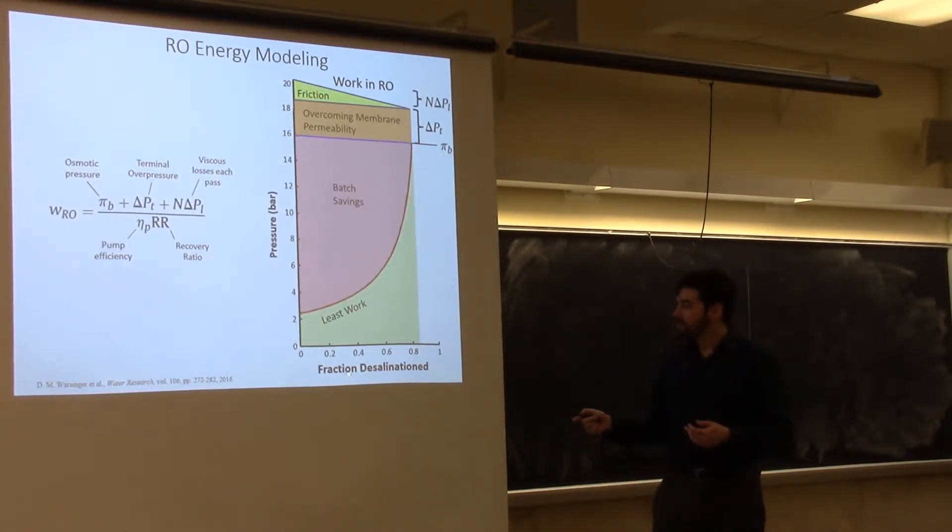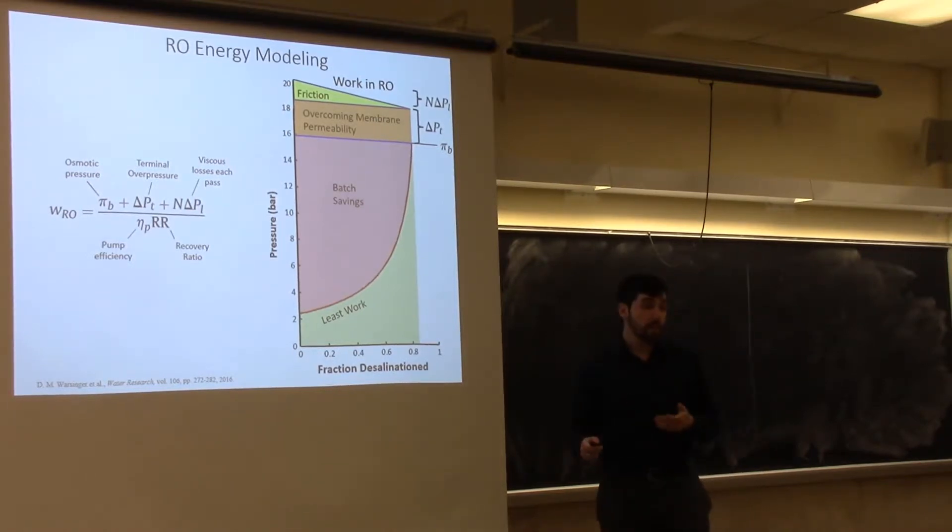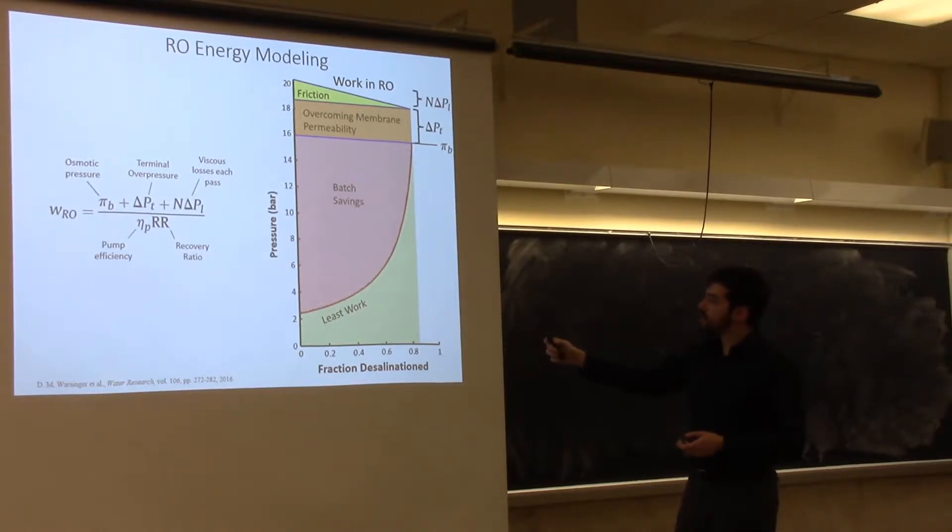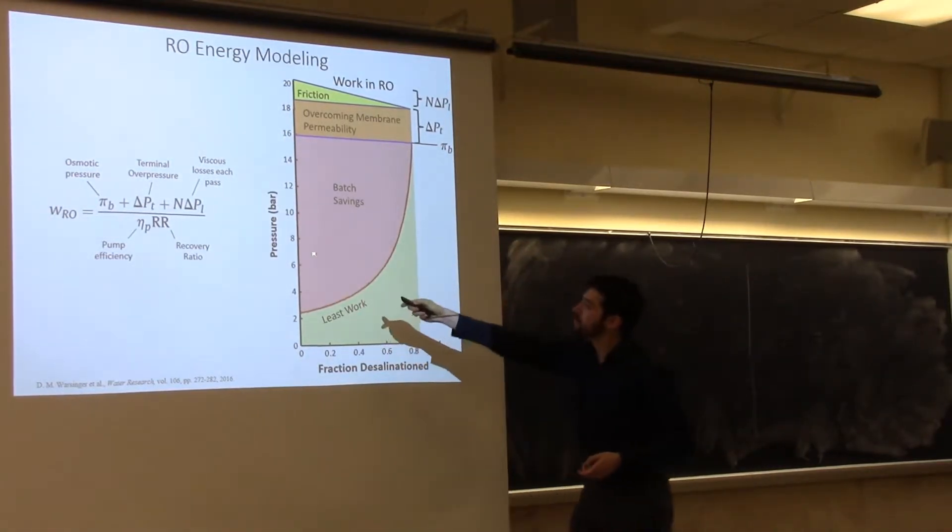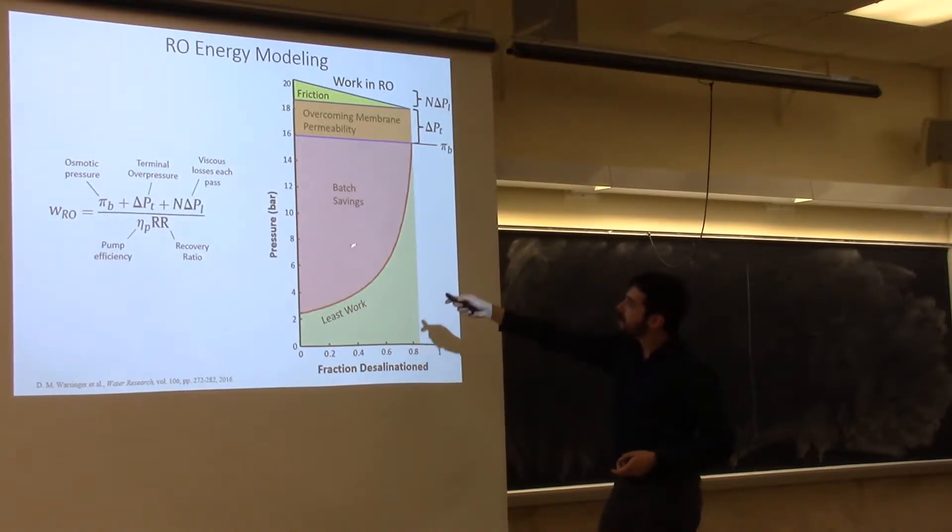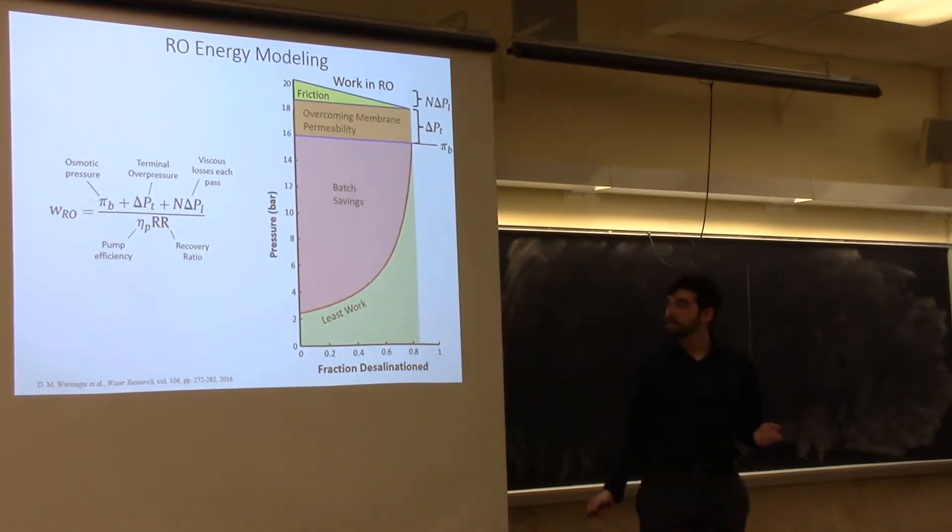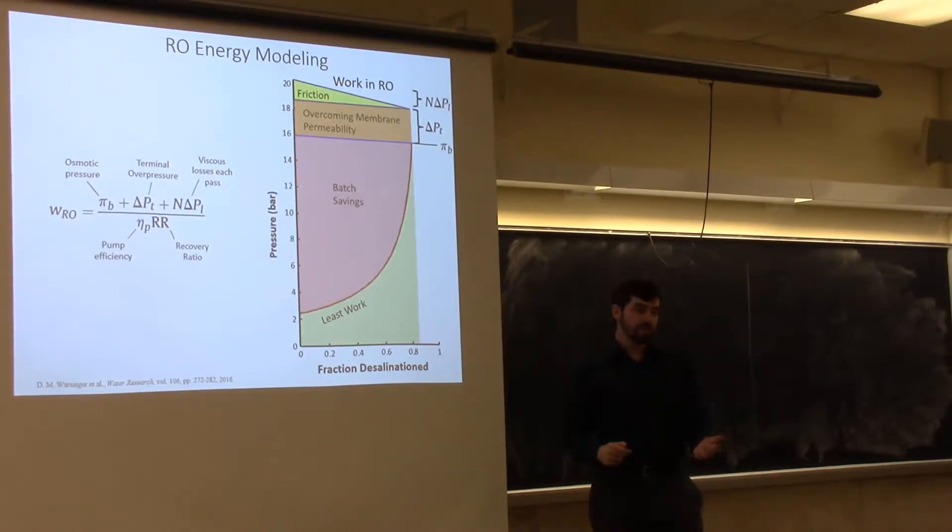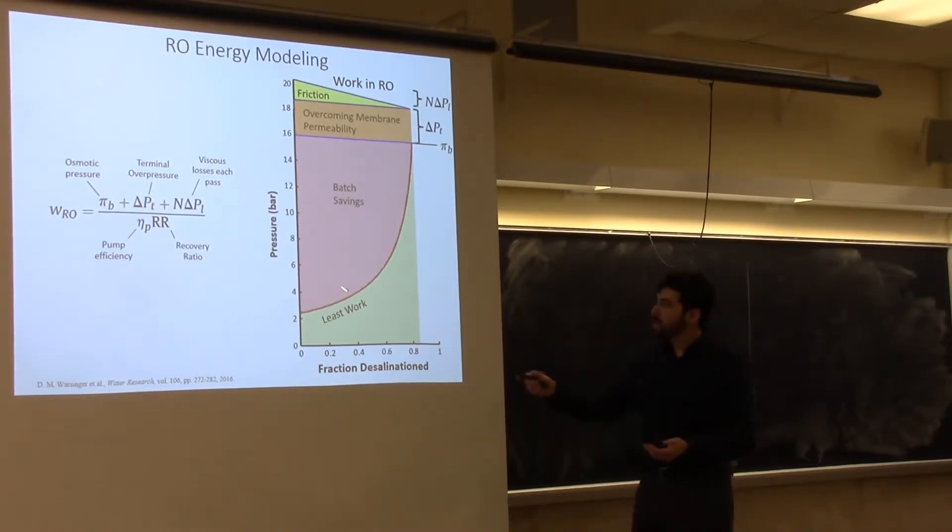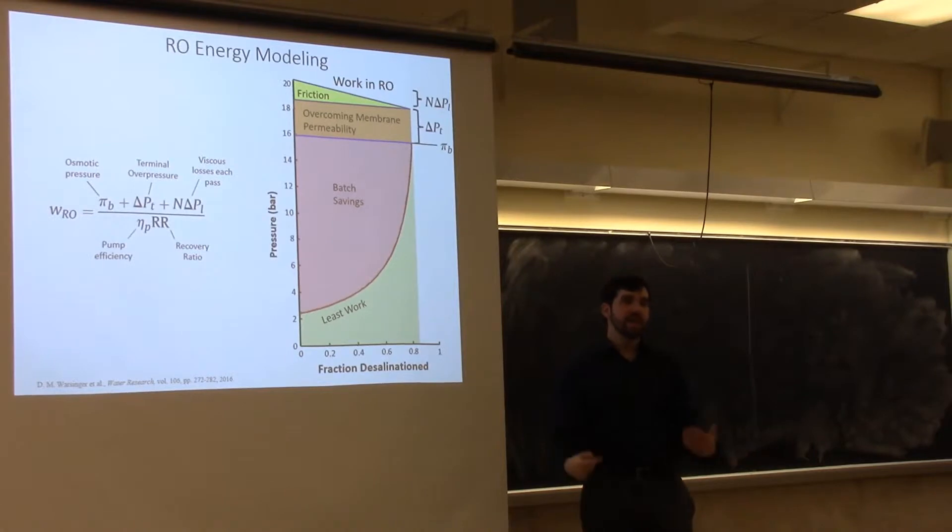If you graph the fraction desalinated or the recovery ratio versus the pressure, the areas in each portion are actually directly proportional to the work. By having a process that can change its pressure over time and effectively do a curve that goes like this as opposed to way up here, we can remove this giant chunk of energy and thus dramatically improve the efficiency. This curve here is our osmotic pressure. The area beneath the osmotic pressure is the least work. The closer we can get to following this line, the closer we can get to maximum efficiency.